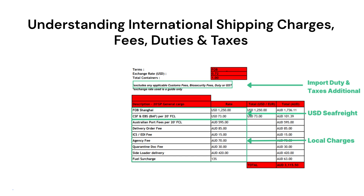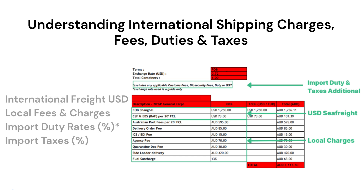A freight company's quote will often include many different fees and charges, often in multiple currencies. The quote document should be itemized to show all of the different fees and charges involved with delivering the shipment to the final agreed destination. A quote is typically made up of international freight from port of loading to port of discharge, usually in US dollars. Note that sea freight and air freight rates are only valid for a set period of time, so confirm the validity dates of a freight forwarder's quotation.